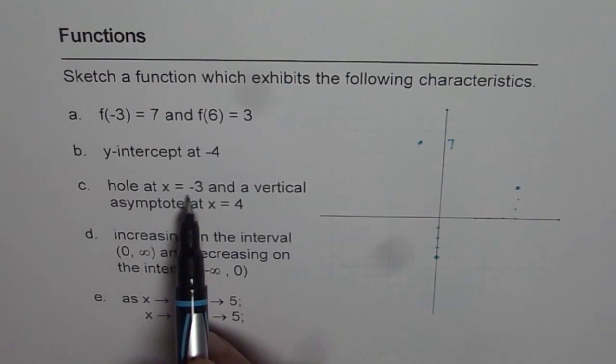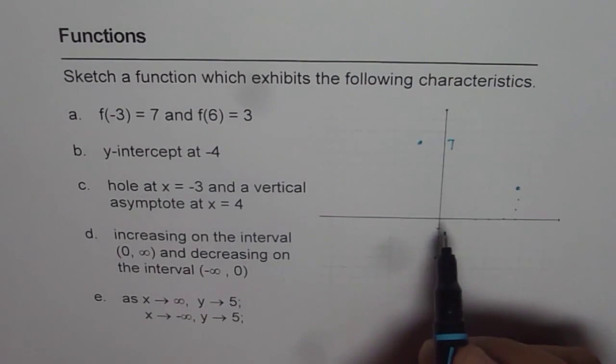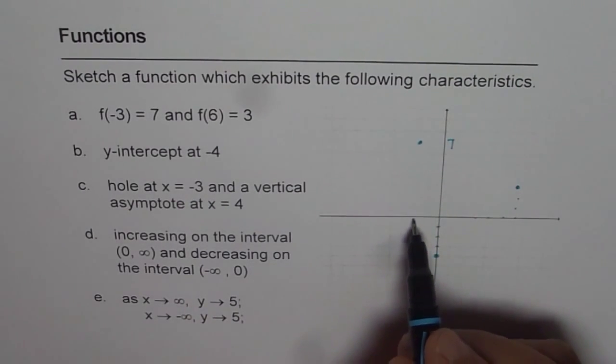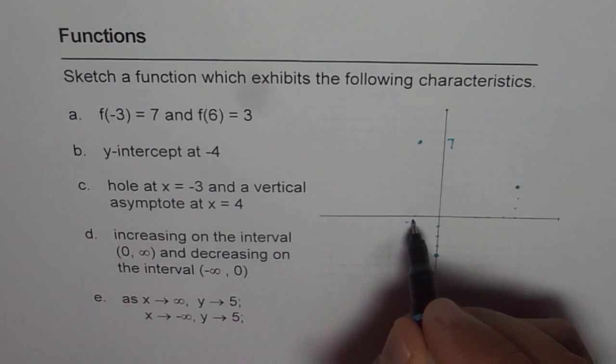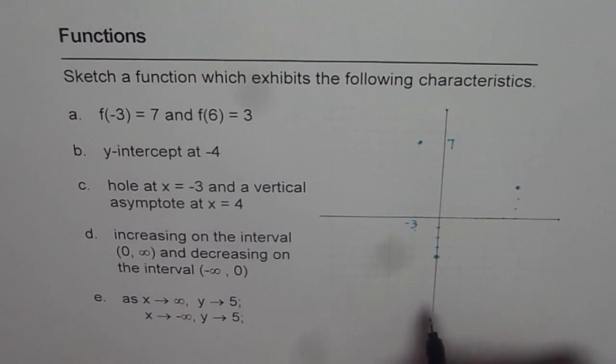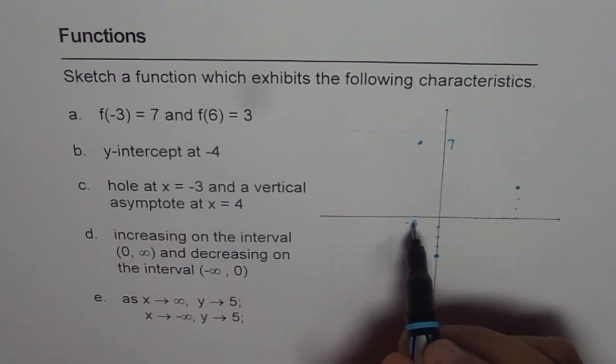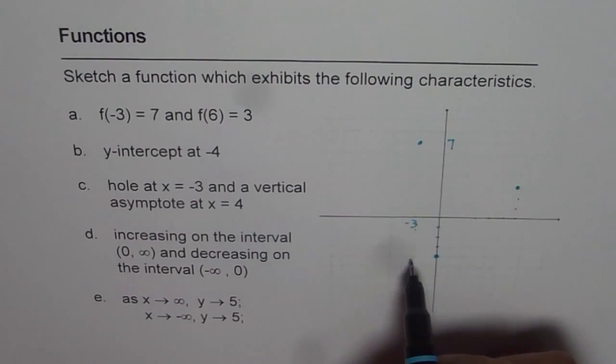Hole at x equals -3. So that means this line where it had, so somewhere on this line, which is -3, I should have a hole. It is not necessary to have this hole on the x-axis, right? It could be anywhere on this line.